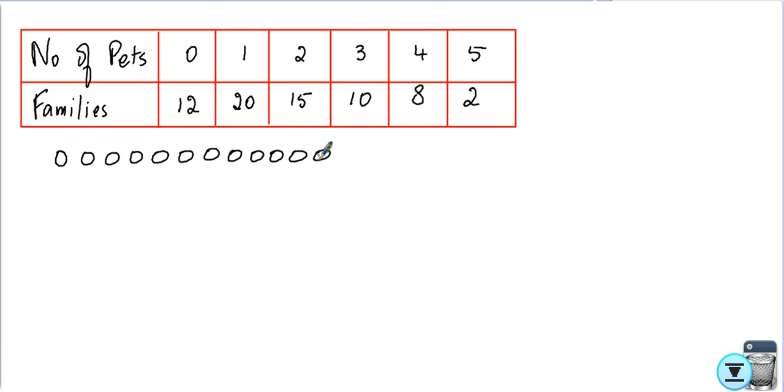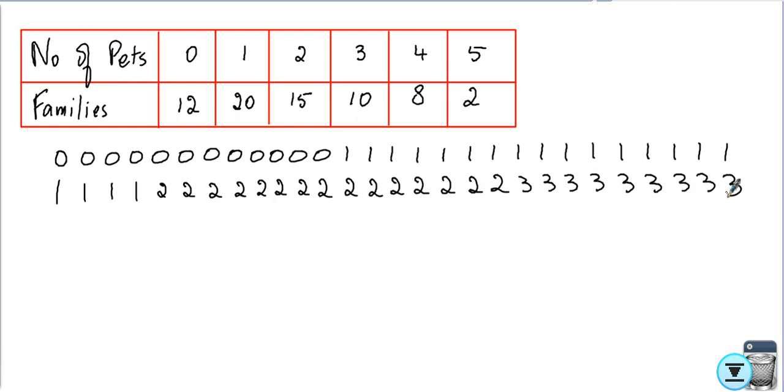Then there were 20 of them who said they had one pet, so I had to write 20 ones. Then there were 15 students who told me we have two pets, so I had to write 15 twos. Then there were 10 students who told me we have three pets, so I had to write 10 threes. There were eight students who told me they had four pets, so I had to write four, eight times. And two told me they had five pets.